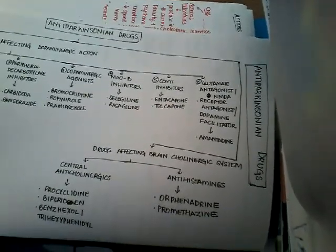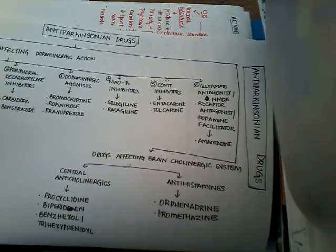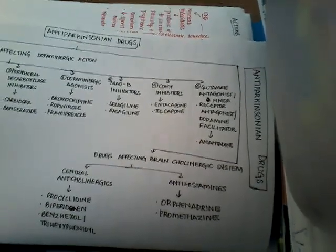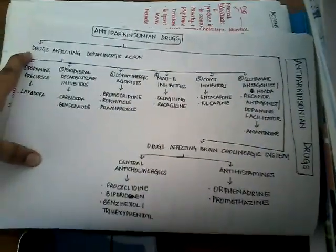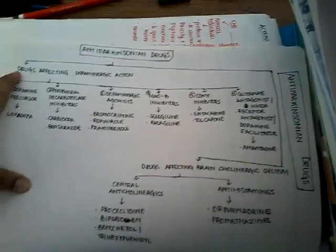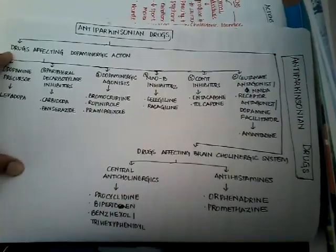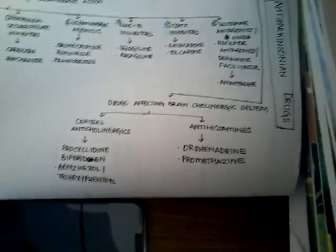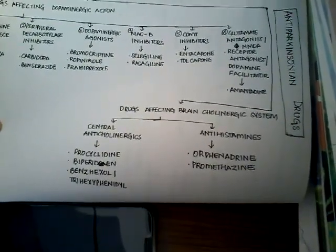Then there is the glutamate antagonist or NMDA receptor antagonist or dopamine facilitator, which includes amantadine. These drugs have dopaminergic action and are most commonly used for Parkinsonism. The other group of drugs affects the brain cholinergic system.